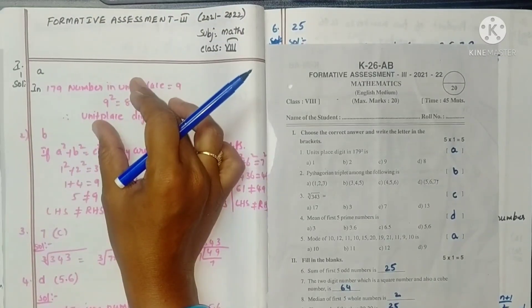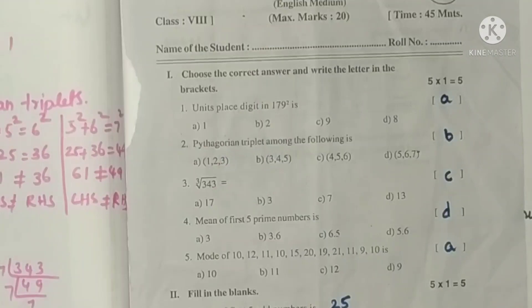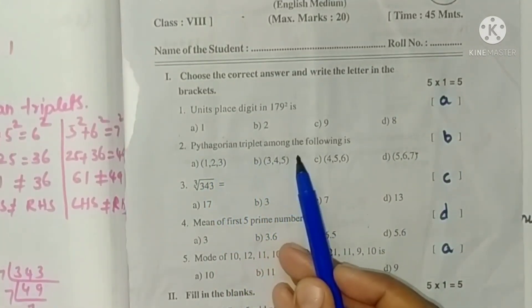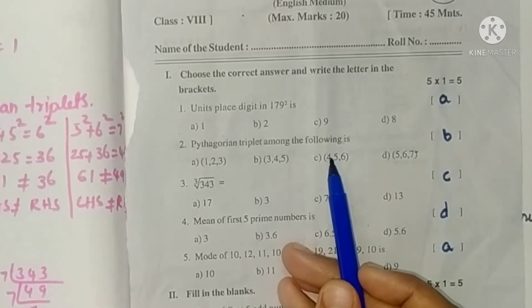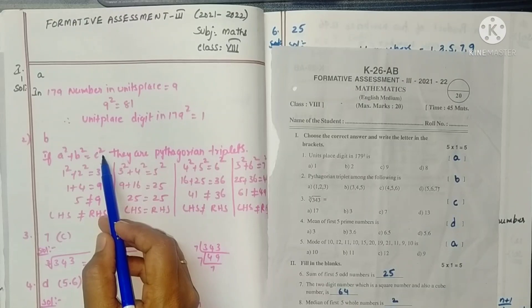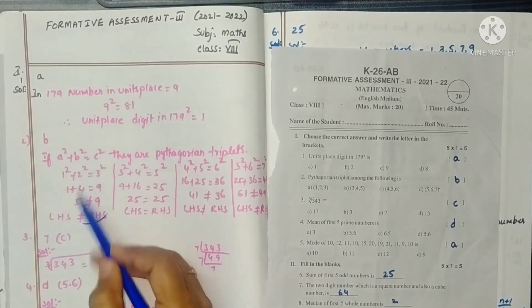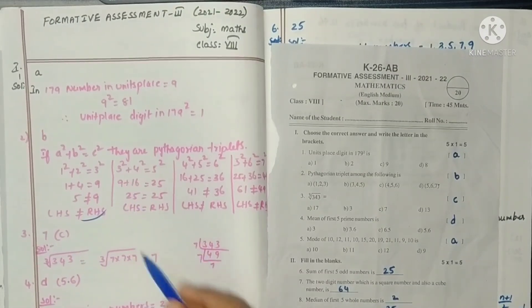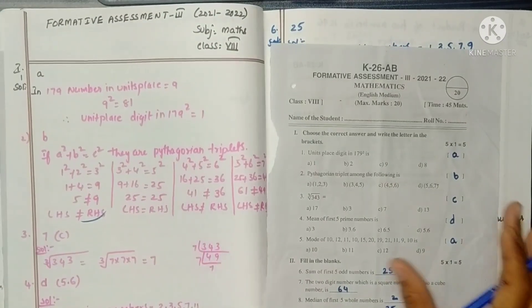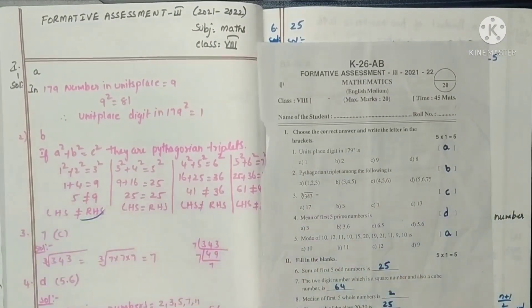If you don't understand the question, let me explain it. Next, Pythagorean triplet among the following. Pythagorean triplet if A square plus B square is equal to C square. So this is option B.